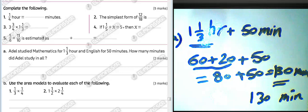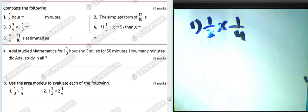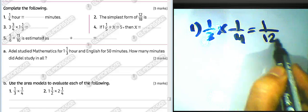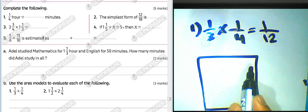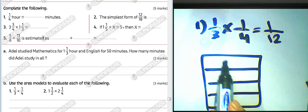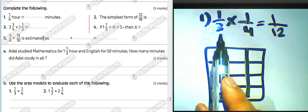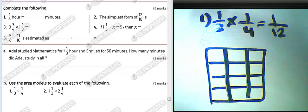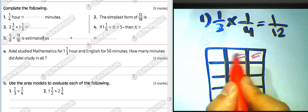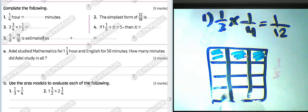Now use area models to evaluate the following. One over three times one over four: we know one times one over one over four equals one over twelve. Draw a rectangle with four rows and three columns — four horizontal and three vertical divisions.